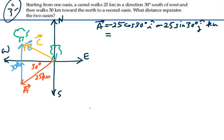So A is equal to negative 21.65 i, minus 12.5 j, kilometers.